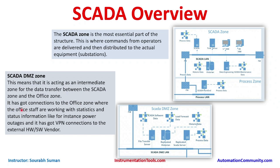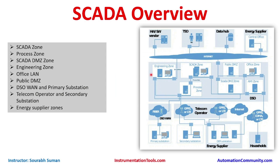The DMZ has connections to the office zone where staff work with statistics and status information such as power outages. It also has a VPN connection — VPN stands for Virtual Private Network — which is a secured connection from the outside, used to create a secure channel over the internet or a public network to external hardware or software vendors.